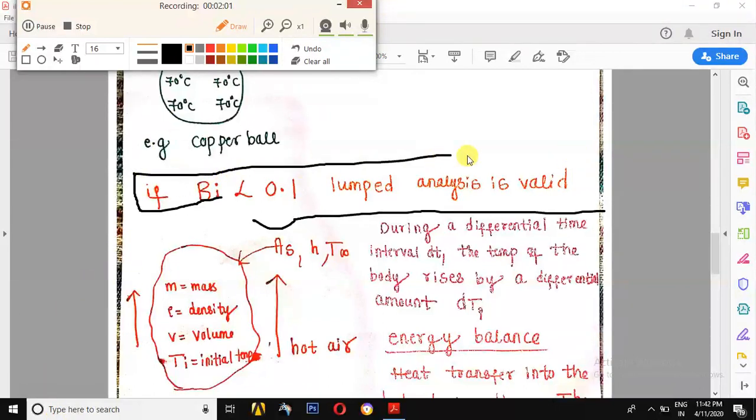If Biot number is less than 0.1, that means lumped analysis is valid. This means the temperature is maintained uniformly throughout the body.